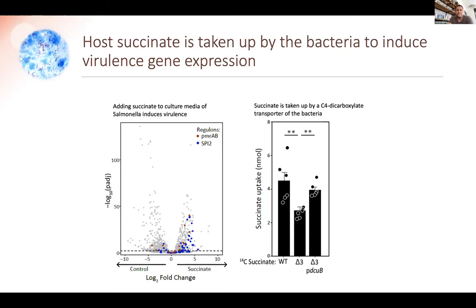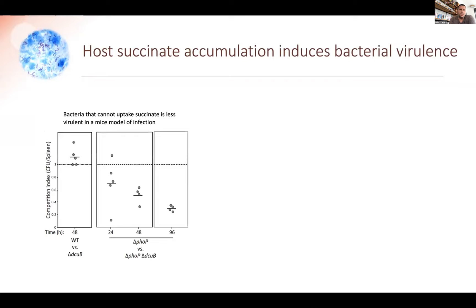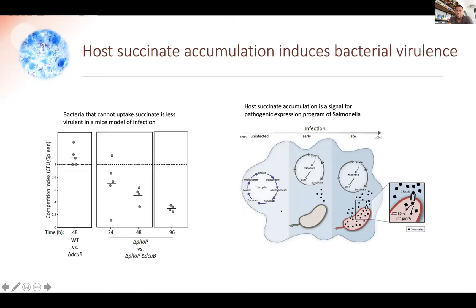To show this is actually important for virulence, Gili depleted this transporter and infected mice with the mutant. If you look at the infection over time, you can see that without this transporter, the bacteria are not able to cause infection and are avirulent in mice. To summarize: the metabolic shift of the macrophages causes high accumulation of host metabolites — succinate is important — and there is a DCUB transporter that allows timely gene expression in the bacteria in order to survive within the macrophage.